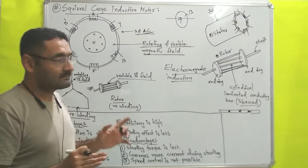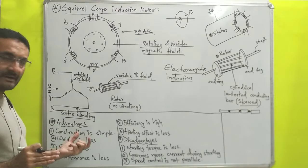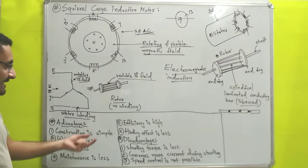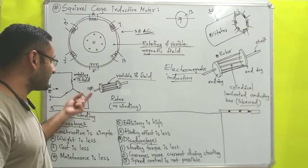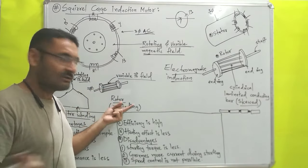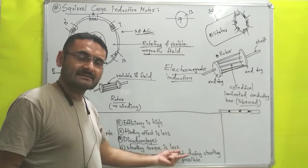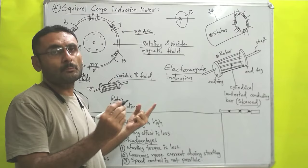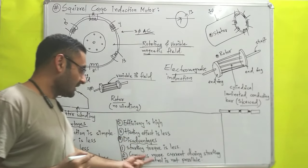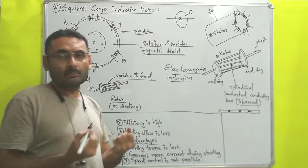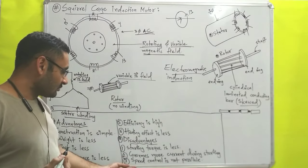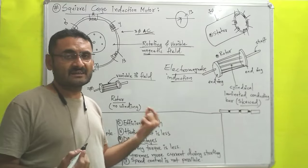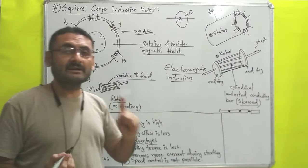Now we will understand the advantages and disadvantages. Advantages: construction is simple, weight is less, cost is less, maintenance is less, efficiency is high, and heating effect is less — because in the rotor we are not using any copper wire. Disadvantages: starting torque is less, meaning that to start this motor you have to supply more current for it to start rotating. It also consumes more current during starting because its starting torque is less. And lastly, speed control is not possible, because we are not using variable resistances as we would in the case of a slip ring motor.